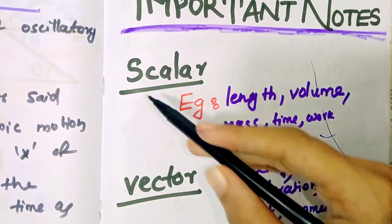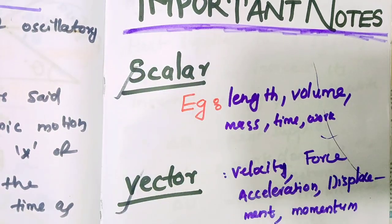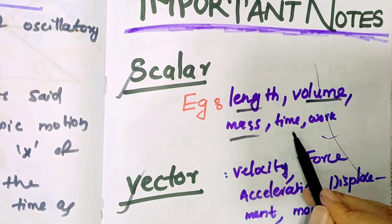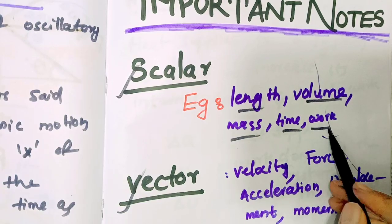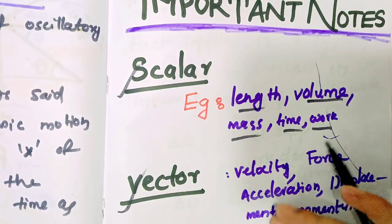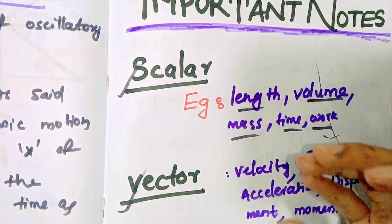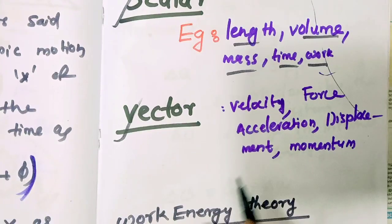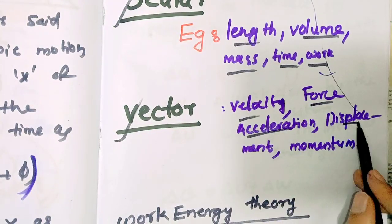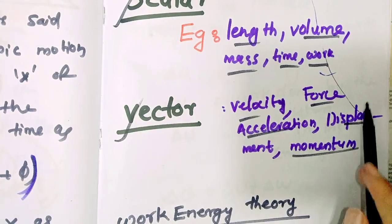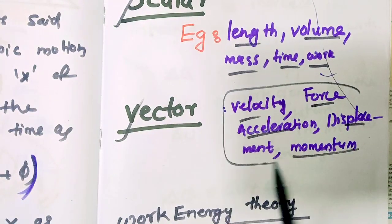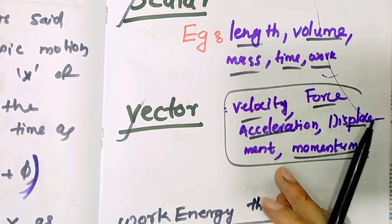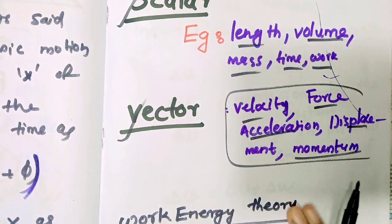What are scalar quantities? What are vector quantities? Length, volume, mass, time, work — these are scalar quantities, which have only a magnitude value. Velocity, force, acceleration, displacement, momentum — these are vector quantities, which means they have both value and direction.